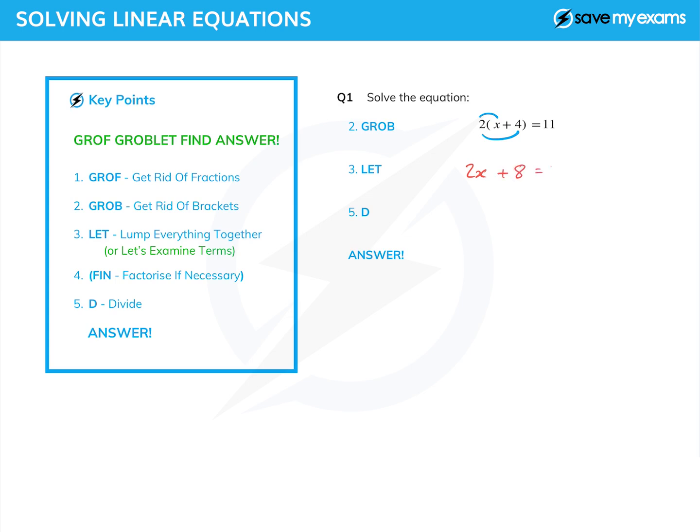Then we look at the terms, we examine the terms if you like, or we lump everything together. We see one term with x in it and then another term on the same side without an x and a term without an x on the other side. So in order to lump everything together we subtract the 8 from both sides because that puts everything with an x on the left hand side and everything without an x on the right hand side. So I get left with 2x equals 11 minus 8 which is 3.